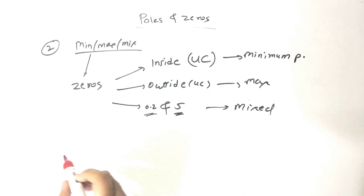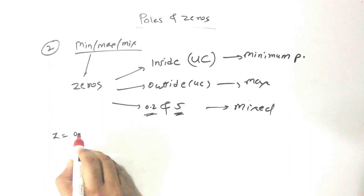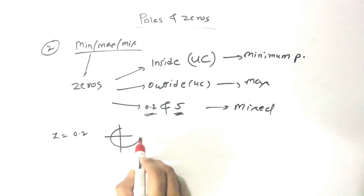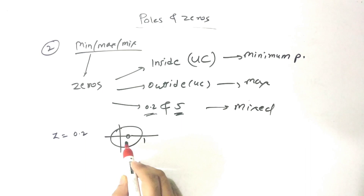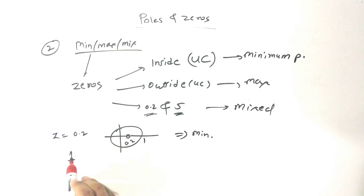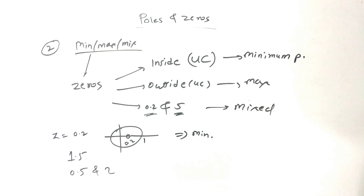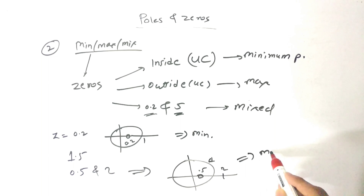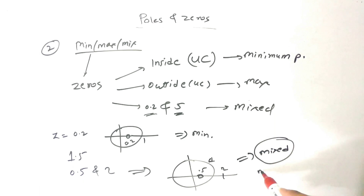Let's take examples. If zero is at 0.2, it lies inside the unit circle, so this is a minimum phase system. If zero is at 1.5, it is outside the unit circle, so it is a maximum phase system. If zeros are at 0.5 and 2, then 0.5 lies inside and 2 lies outside the unit circle — this is a mixed phase system, also known as a non-minimum phase system.